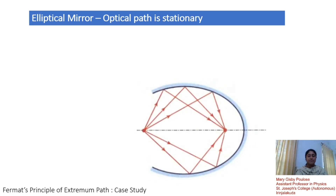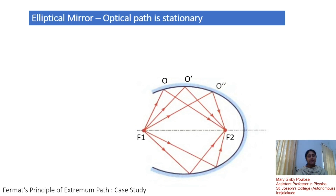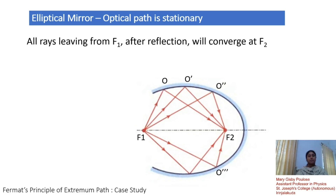Let us consider an elliptical mirror as shown. It has two focal points, f1 and f2 — they are two conjugate points, which means it can be reversed. Light emerging from f1 can be reflected upon the points O, O', O'', and so on. All the reflected light from different points will converge towards f2. That is, all rays leaving from f1 after reflection will converge at f2. That is the peculiarity of these conjugate points. For all these rays, the angle of incidence equals the angle of reflection.